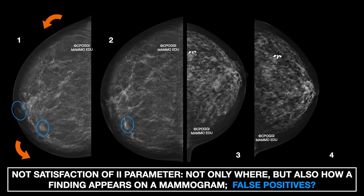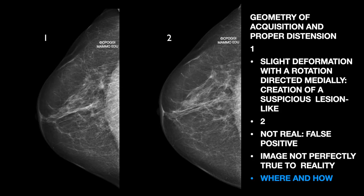Let's consider now images three and four. In three, again rotation, this time directed laterally. Is this finding real? Repetition in image four, more correct: the finding seems to have disappeared — that is, it was a false positive. Again, a rotation directed medially — you see the ojival shape. This finding appears as a spiculated one. Repetition in image two with a more correct acquisition geometry, and the finding has disappeared.